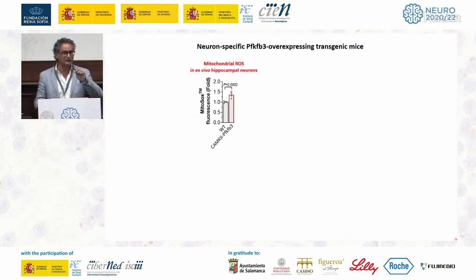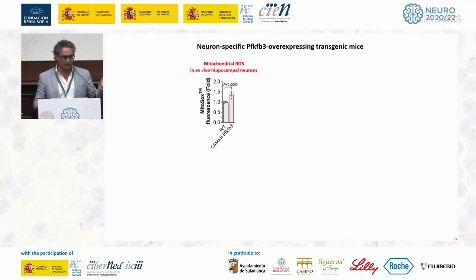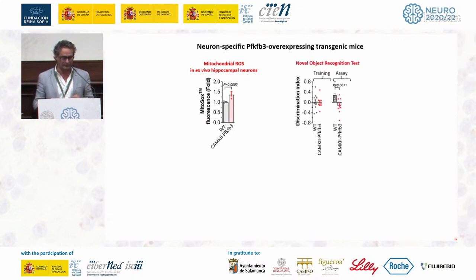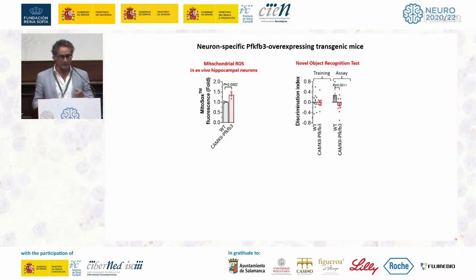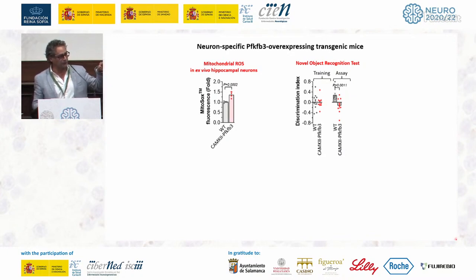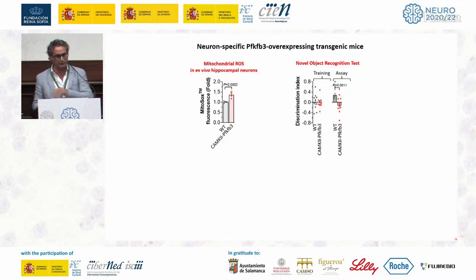In these mice, there was an increase in ROS, as expected because of the switch from the pentose phosphate pathway to glycolysis. There were also problems in learning and memory, especially in short-term memory assessed by the novel object recognition test, with a very strong impairment. This was observed from three months of age and was progressive; by eight months of age, they had significant problems.